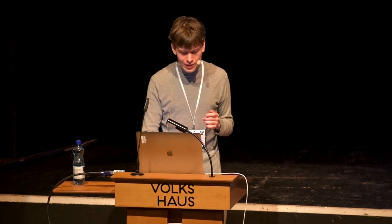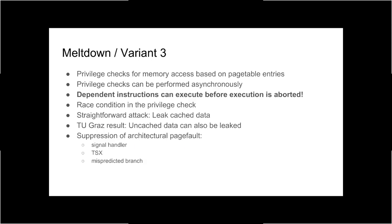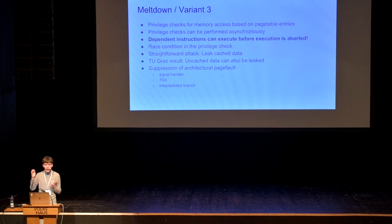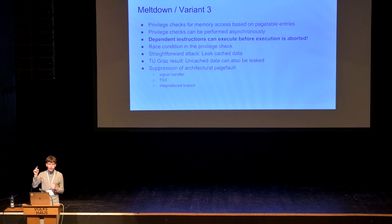This dereference of a kernel address will not architecturally execute — the processor raises a page fault because you're accessing an address you're not supposed to. There are three ways to deal with this: you can use a signal handler to tell the OS to continue execution after the page fault (noisy but it works); you can use TSX instructions to tell the processor to roll back execution state if something bad happens; or you can put a mispredicted branch in front of the faulting instruction so the fault itself only runs as a transient instruction and is not executed architecturally.